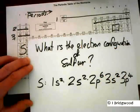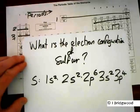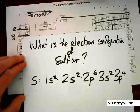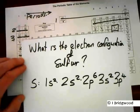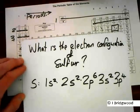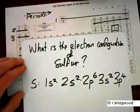So the electron configuration of sulfur is 1S2, 2S2, 2P6, 3S2, 3P4. All you need is to count using the periodic table.